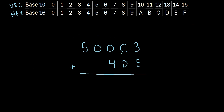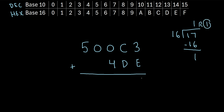Let's try another example. Let's say we have 500C3 plus 4DE. We'll start with 3 plus E. E is the same as 14. So we really have 3 plus 14, which is 17. The hexadecimal system doesn't have a letter to represent 17. So we use the trick: how many 16s go into 17? Just 1. So 1 times 16 is 16. We subtract 16 and we're left with a remainder of 1. The remainder goes here, and the 1 is placed at the top of the next column.